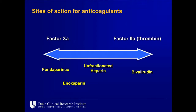Bivalirudin has a half-life of 25 minutes, so it clears in about two hours. On the other end of the spectrum is fondaparinux, a pure Factor Xa inhibitor. If you use fondaparinux in the cath lab, the ACT is normal — it has no direct Factor IIa activity and therefore doesn't influence ACT at all. Enoxaparin given subcutaneously for ACS has a Factor Xa to IIa ratio of 12:1, so you don't get much ACT bump. However, when given IV, that ratio is 4:1, so you can get an ACT around 200 seconds. Unfractionated heparin, in the middle, has roughly a 1:1 Xa to IIa ratio.